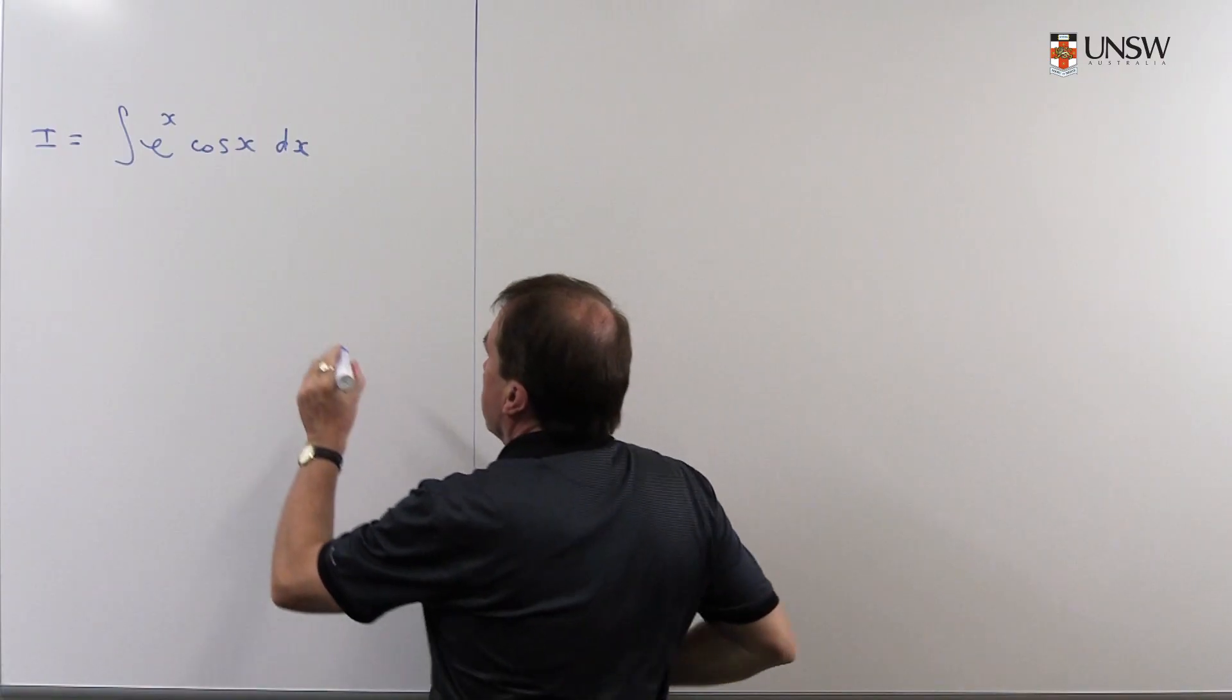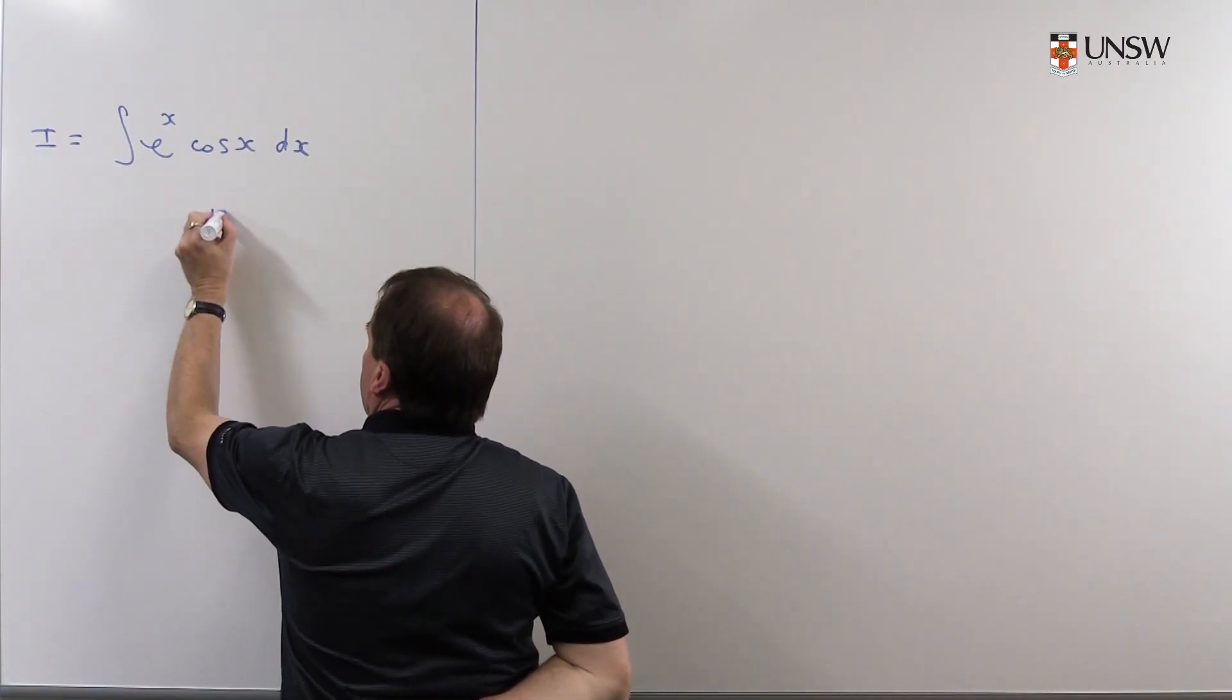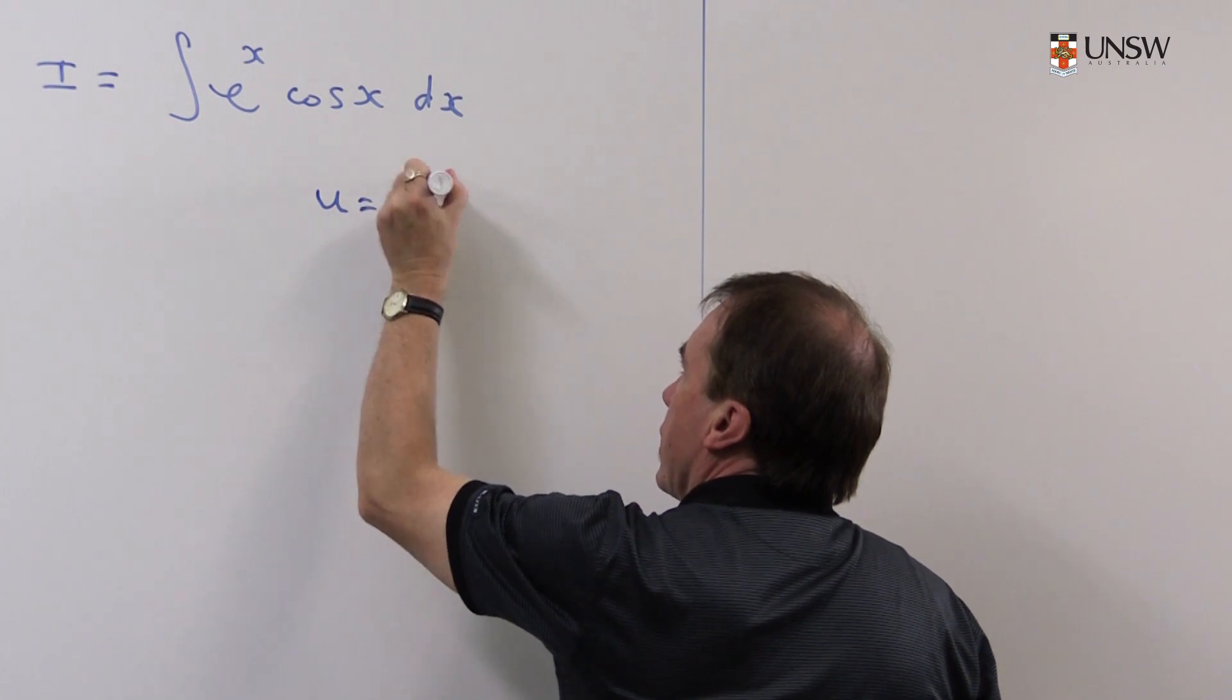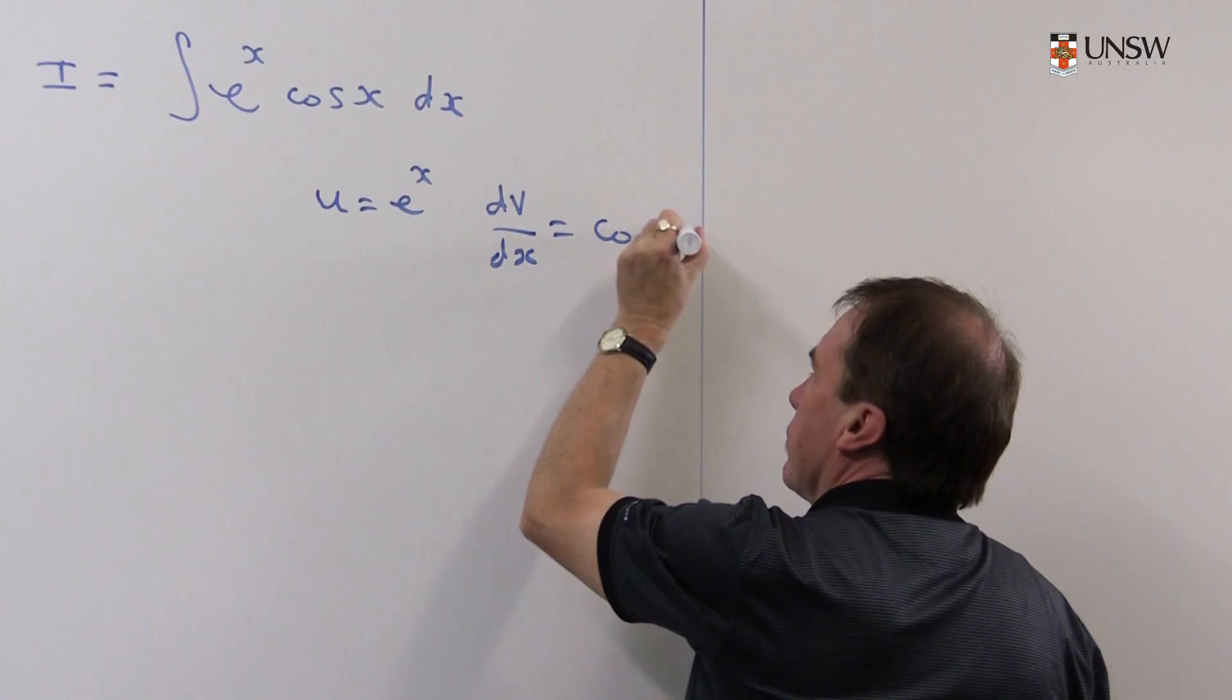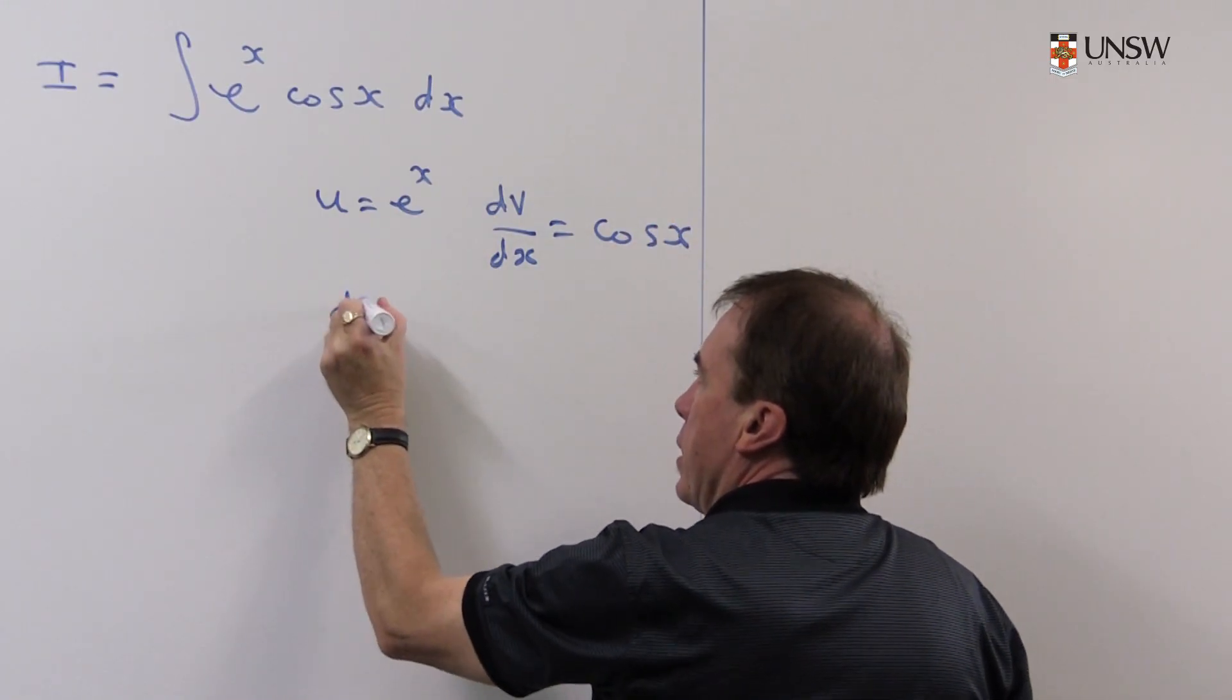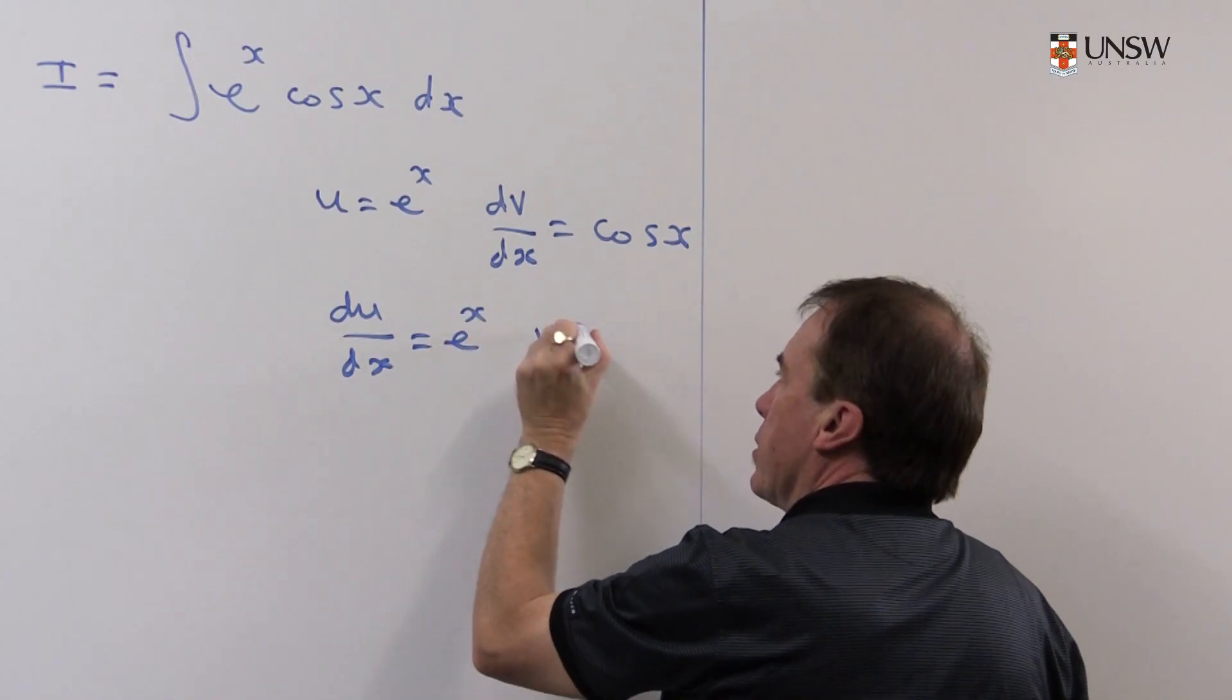So I like to over the side here to write down what I'm doing. I'm going to put u equal to e to the x, and I'm going to put dv dx equals cos x. And then underneath, I differentiate this one and I integrate this one.